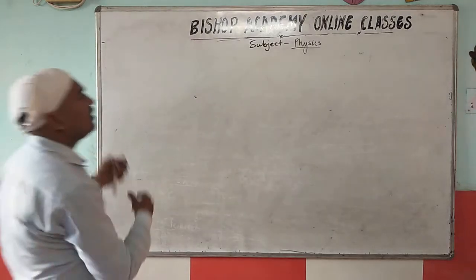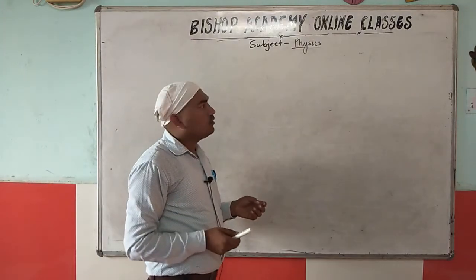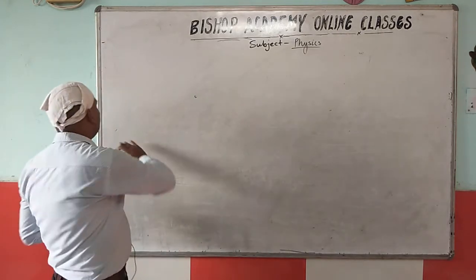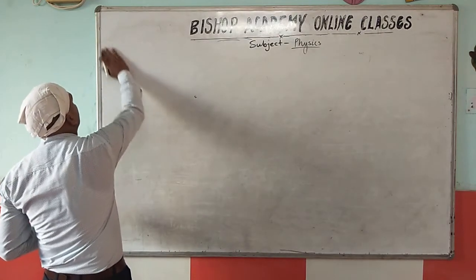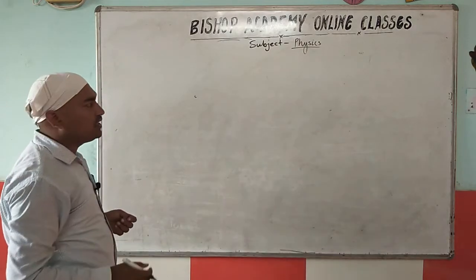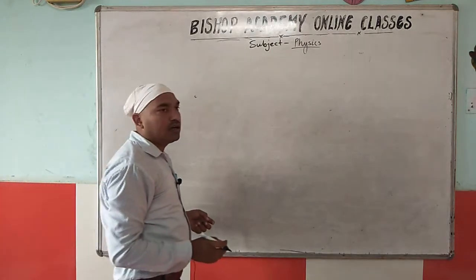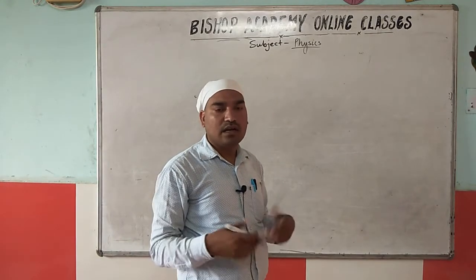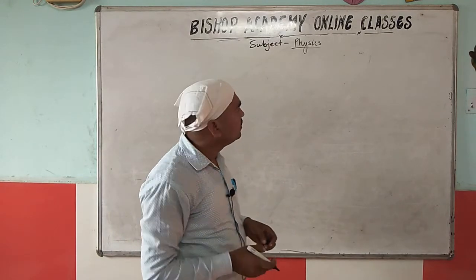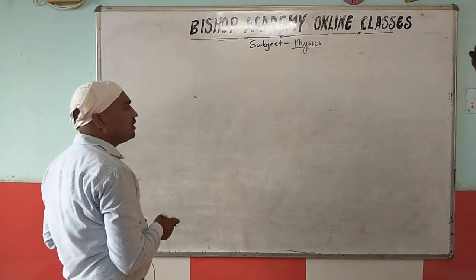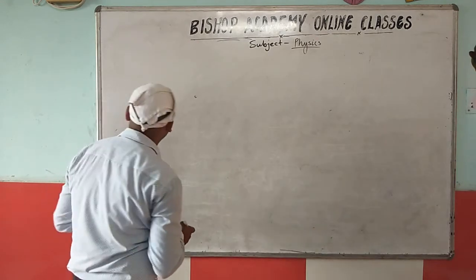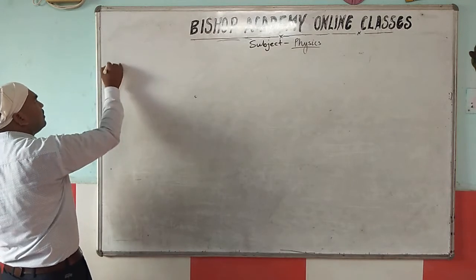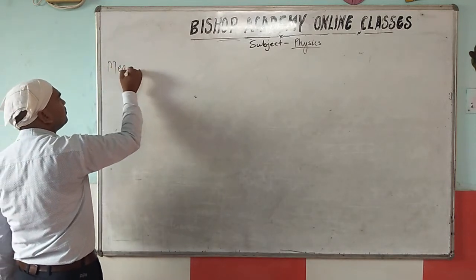Welcome, children, to Bishop Academy online classes. In the last part we discussed alternating current and properties related to alternating current, how an alternating current should be represented. In this topic we shall discuss the mean or average value of AC.